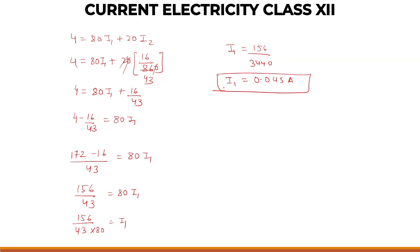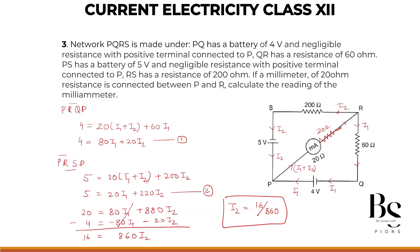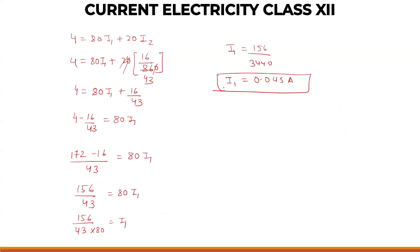And what was I2? I2 was 16 upon 860. So that will be 0.0186 ampere.